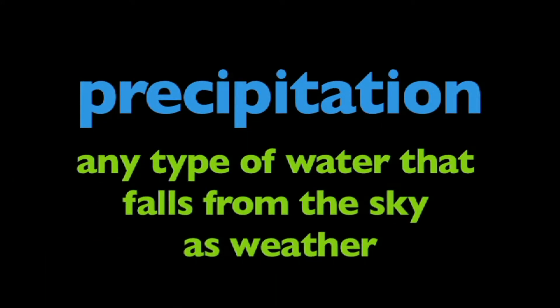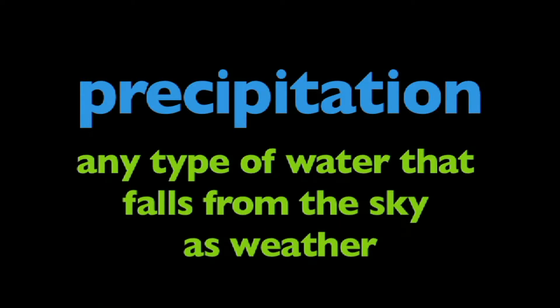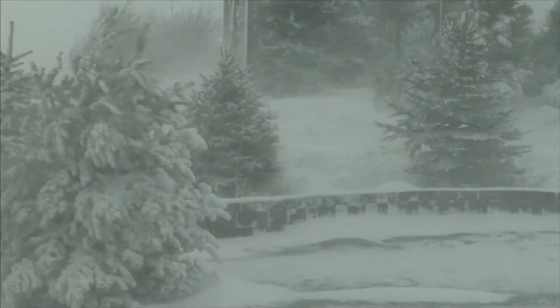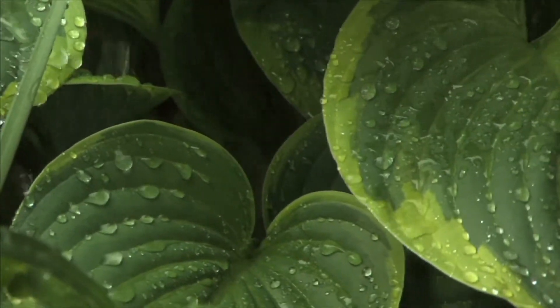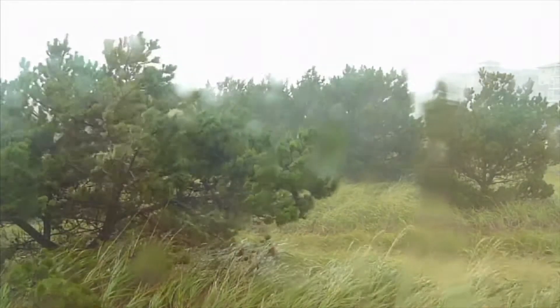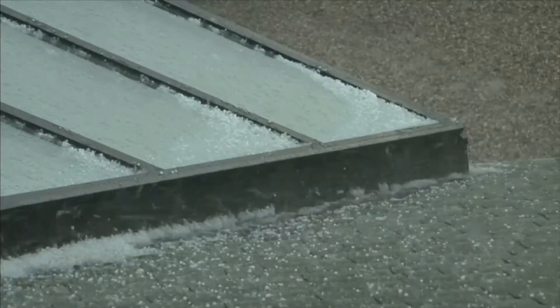In this program, we're going to learn about precipitation. What is precipitation? Precipitation is any type of water that falls from the sky as weather. Precipitation includes snow, rain, sleet, freezing rain, and hail.